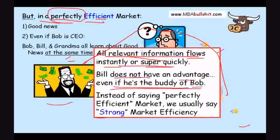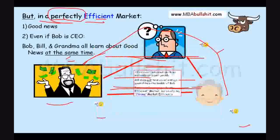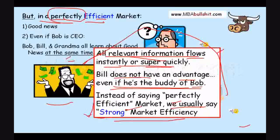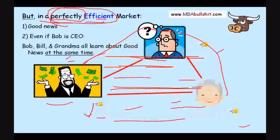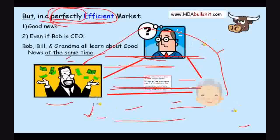In MBA bullshit language — in business school bullshit language — instead of saying 'perfectly efficient market,' we usually say 'strong market efficiency.' So if you're in business school wondering what strong market efficiency is that your textbook or professor keeps talking about, they're talking about a perfectly or almost perfectly efficient market, like this situation where they all learn about the information at the same time or almost the same time.